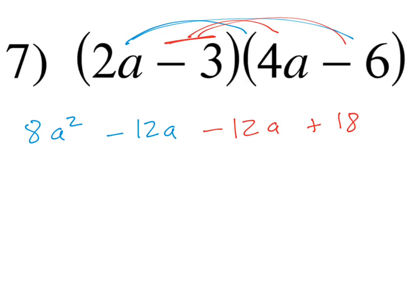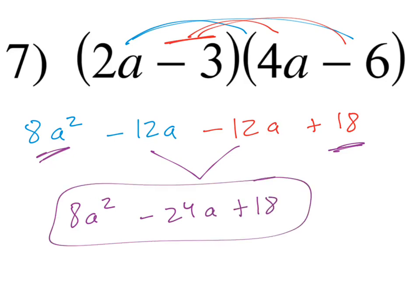The rest of this is just simplifying. The a squared can't combine anything. The 18 can't, but these two can. And so you'll get 8a squared minus 24a, and then plus 18. And voila, we have double distributed here.